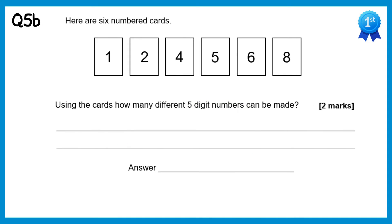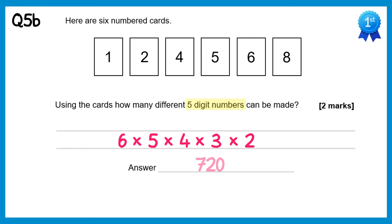For part B, we want 5 digit numbers now. So we'll start with the first digit — I could choose any of them, so there are 6 ways. For the next one there's only 5 ways, and then the next one 4 ways, then 3 ways, then 2 ways. And that's the final digit — remember, there are 5 digits this time. And if you times this, it's also 720.